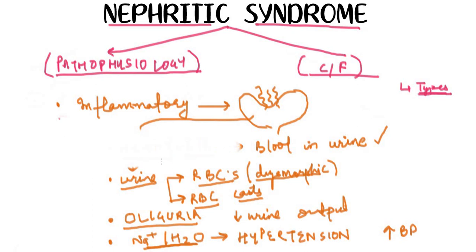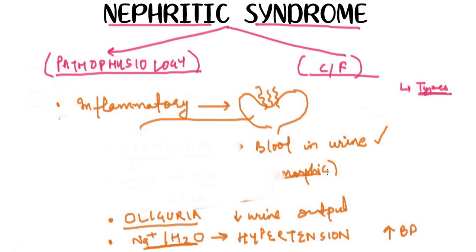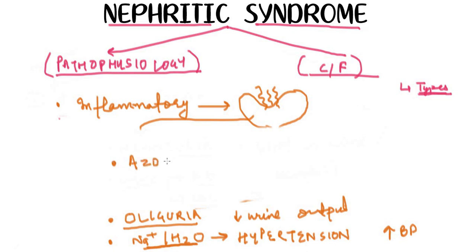Since there is oliguria, it will also lead to the retention of nitrogenous waste products within the body. The retention of nitrogenous waste products is called azotemia — that is, there will be elevation of blood urea nitrogen (BUN) and elevation of creatinine in the blood.